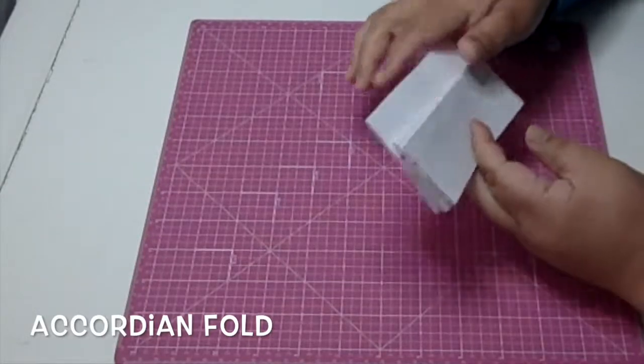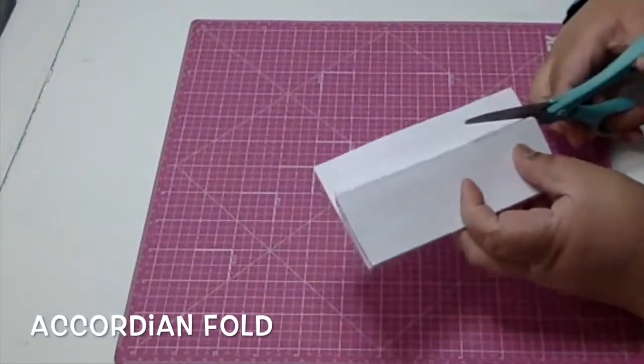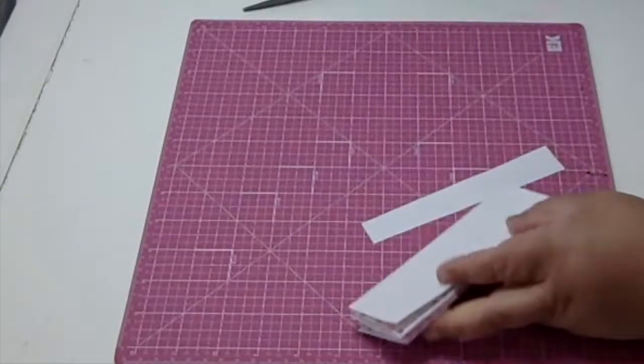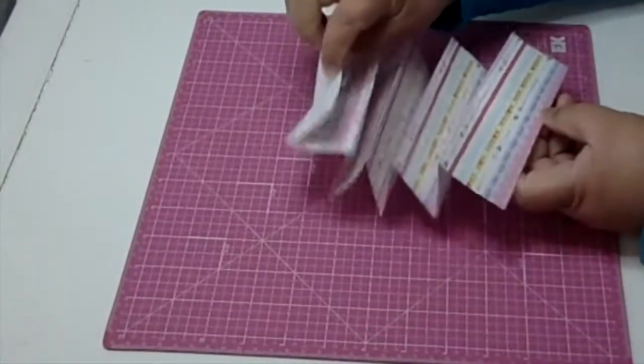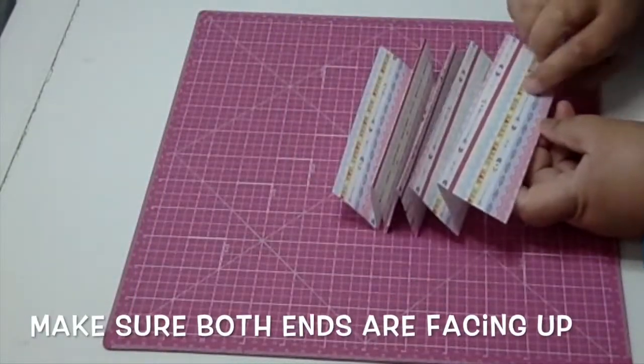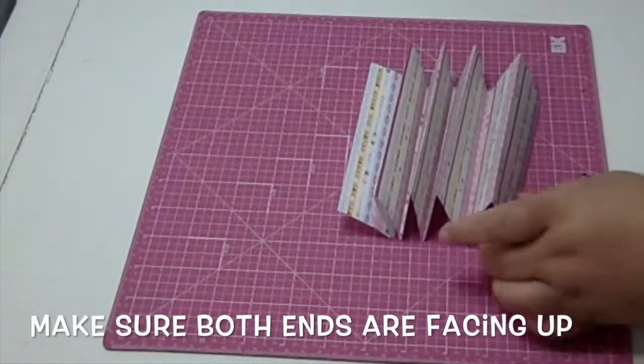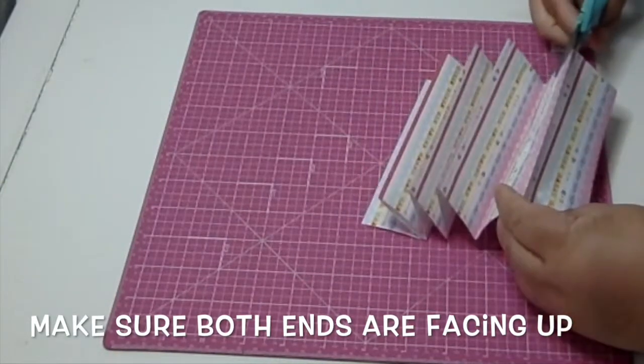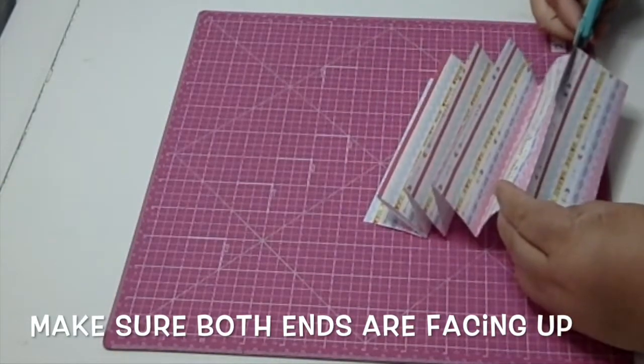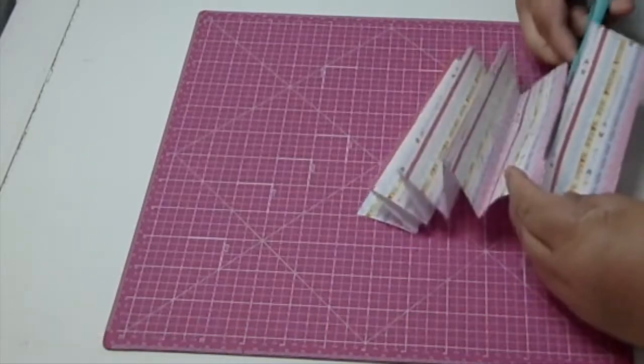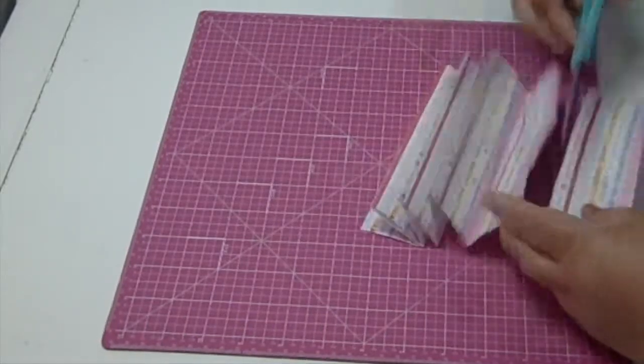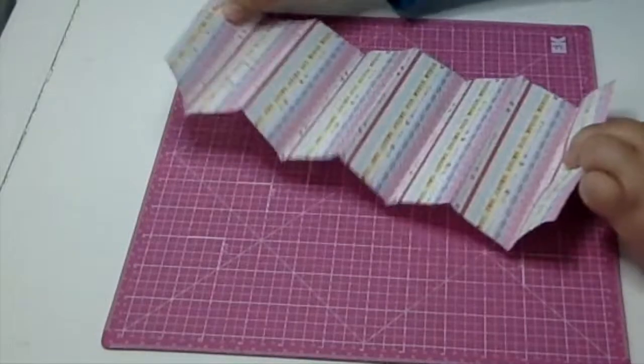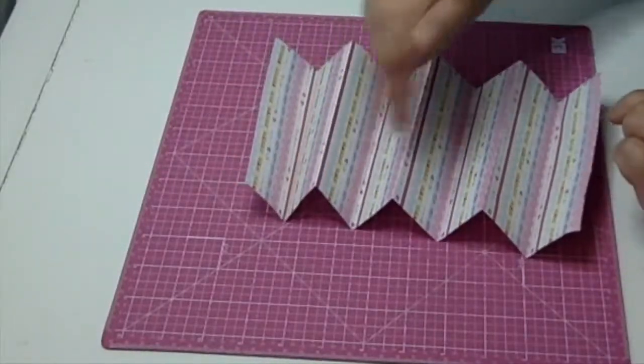I've got this extra piece here so I'm just gonna cut that off. What you want is your V folds to end with an upward-like end. So notice how this side is pointing down - I'm just gonna cut that part off so that the last piece is also pointing up.